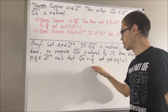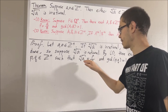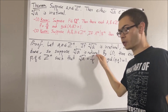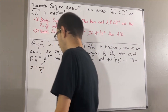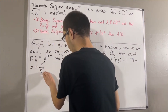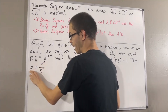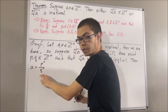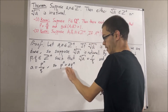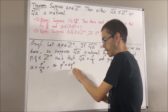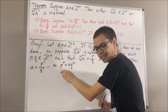Now, if we take this equation and raise both sides to the power of n, we get that a is equal to P to the power of n over Q to the power of n. And then, if we multiply Q to the power of n to the other side, we get that P to the n is equal to a times Q to the n. And now we see that P to the n is equal to an integer times Q to the n. Therefore, Q to the n is a divisor of P to the n.